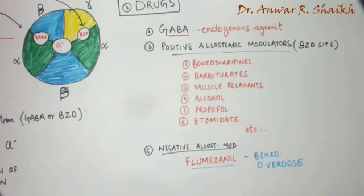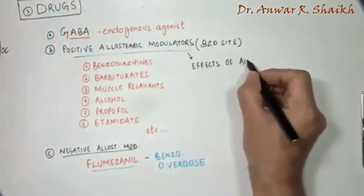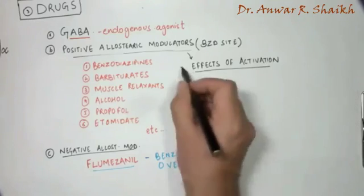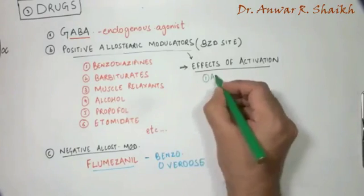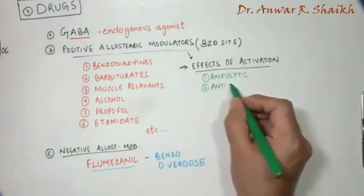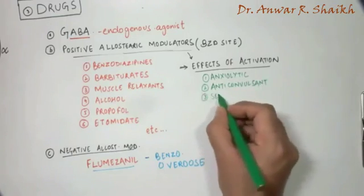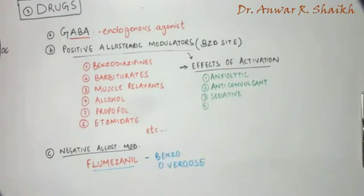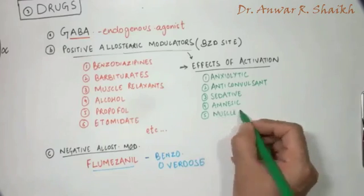Now let's look at the effects of activation of the GABA receptor. The various drugs which act on this receptor produce various effects. Some of which are anxiolytics, some are anticonvulsant effect, some are sedative effect, some cause amnesia, and some muscle relaxant.